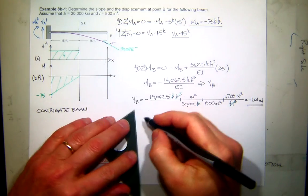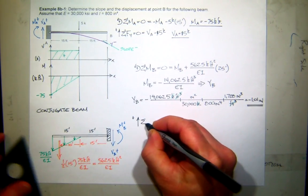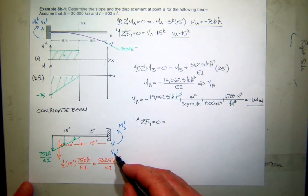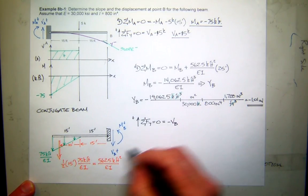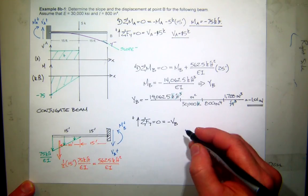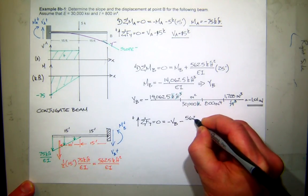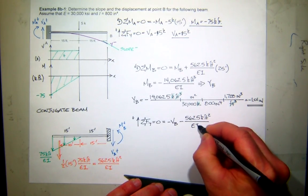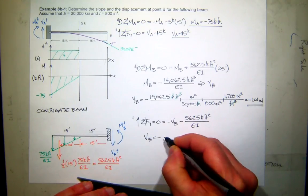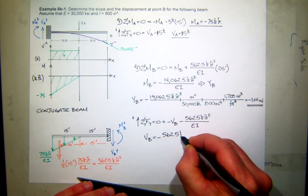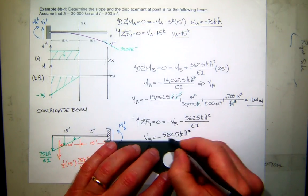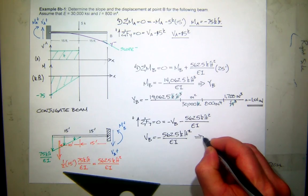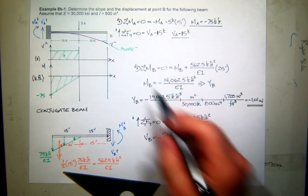I may have worked this problem just a few too many times in the past. Okay. So about 1 inch maximum displacement at the end. So how can I find the slope? Well, all I have to do is sum forces in the y direction. In this case, I have the shear force at B acting down. And my applied load of 562.5 also is acting down. So what is the shear at B? Well, the shear at B is negative 562.5 kip feet squared divided by EI. Remember, shear in the conjugate beam is slope in the real beam. So I have a negative slope, and that matches what we saw before.